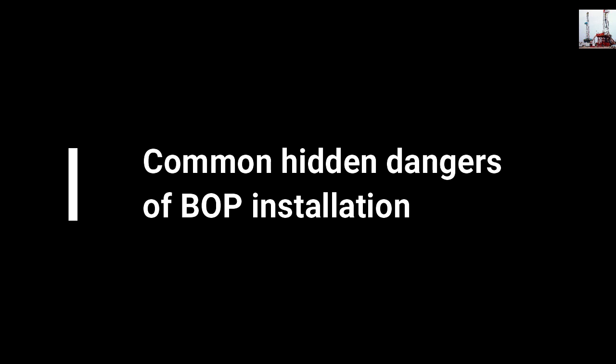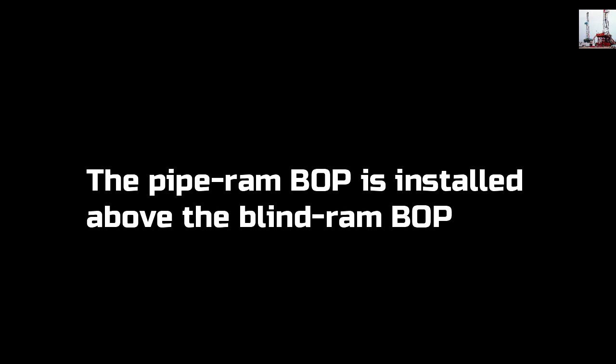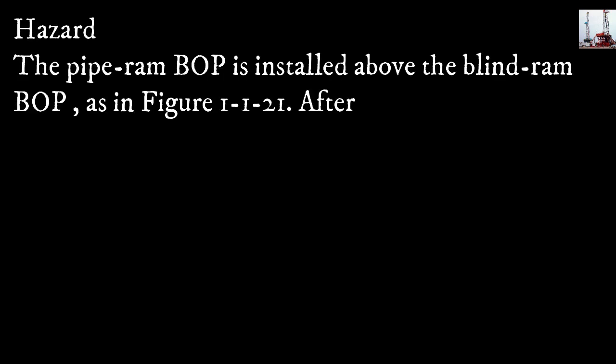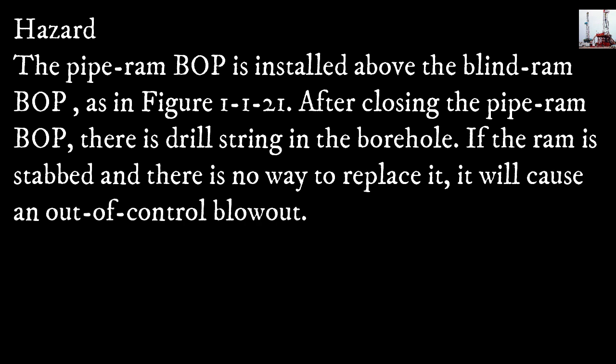Common hidden dangers of blowout preventers: The pipe ram blowout preventer is installed above the blind ram blowout preventer, as shown in Figure 1121. After closing the pipe ram blowout preventer, there is a drill string in the porthole. If the ram is stabbed and there is no way to replace it, it will cause an out-of-control blowout. A blowout happened — we will see this in the next slides.